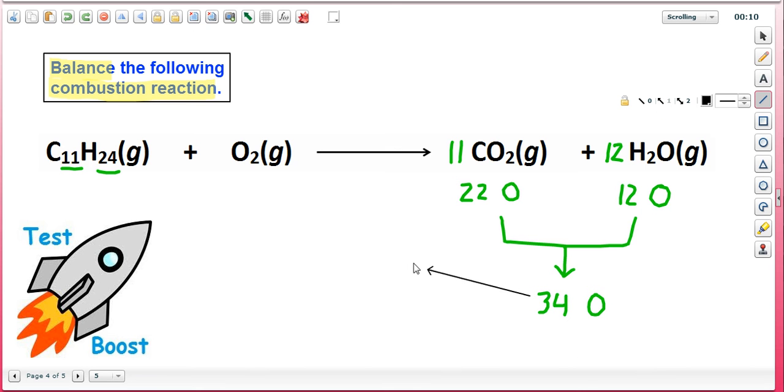By including a coefficient of 17 in front of molecular oxygen, because 17 times 2 gives 34 oxygen atoms, and now this reaction is, in fact, balanced.